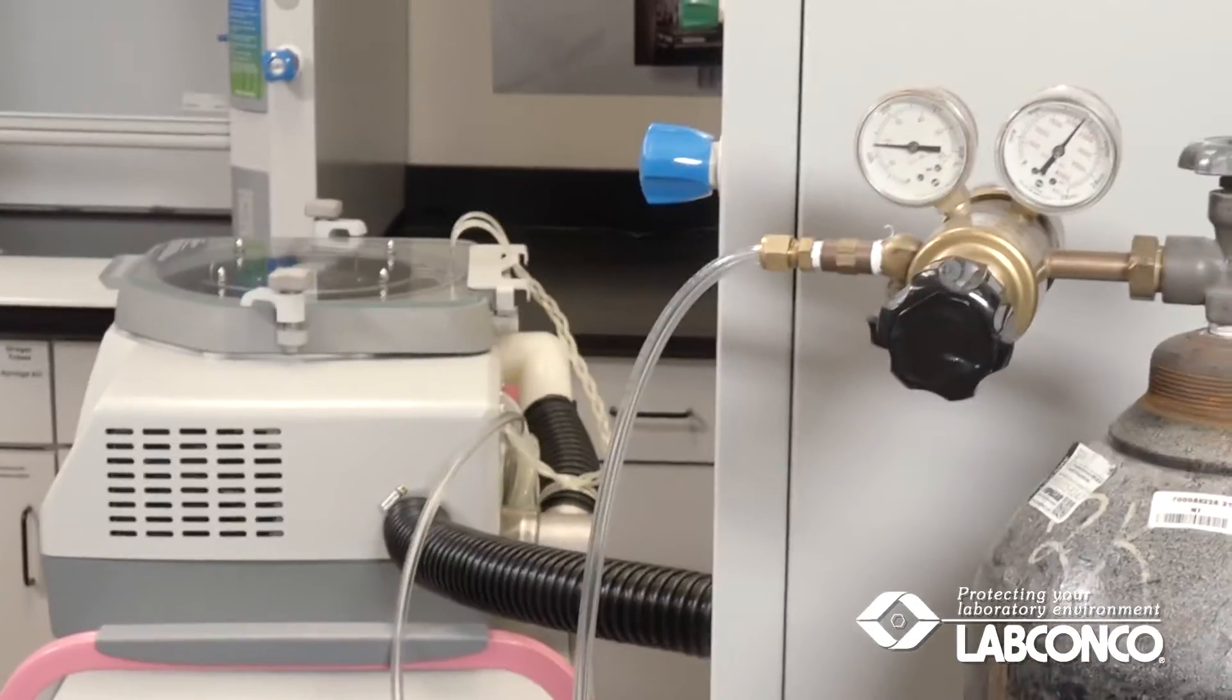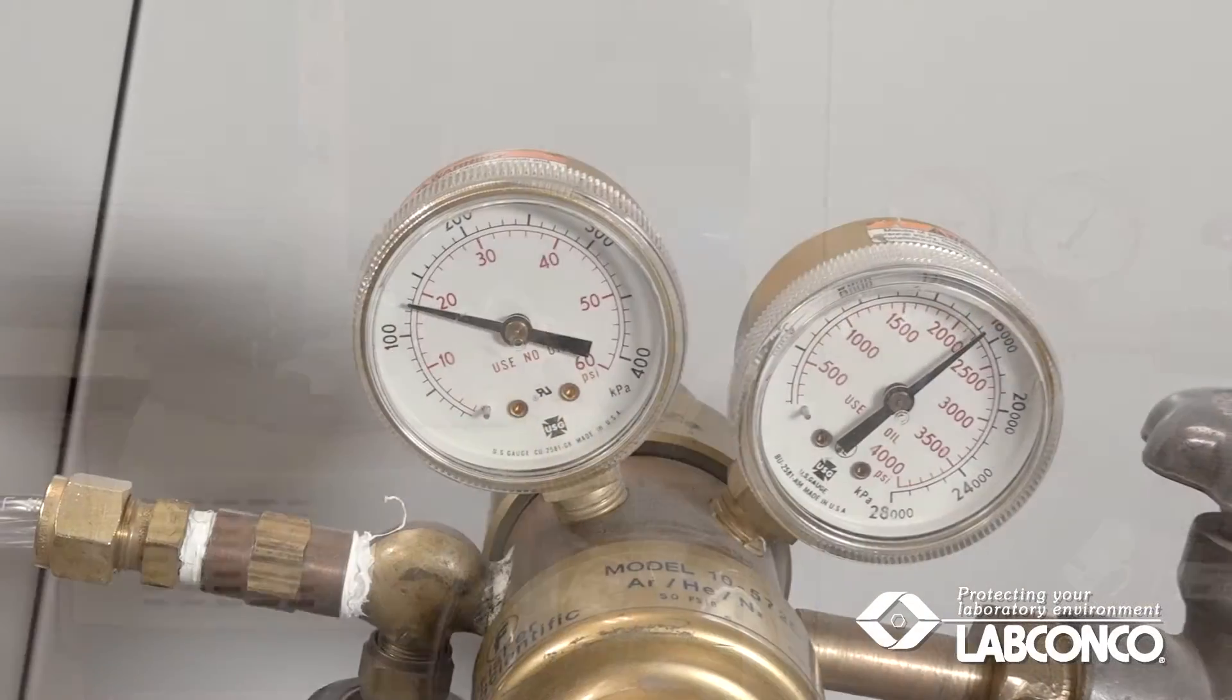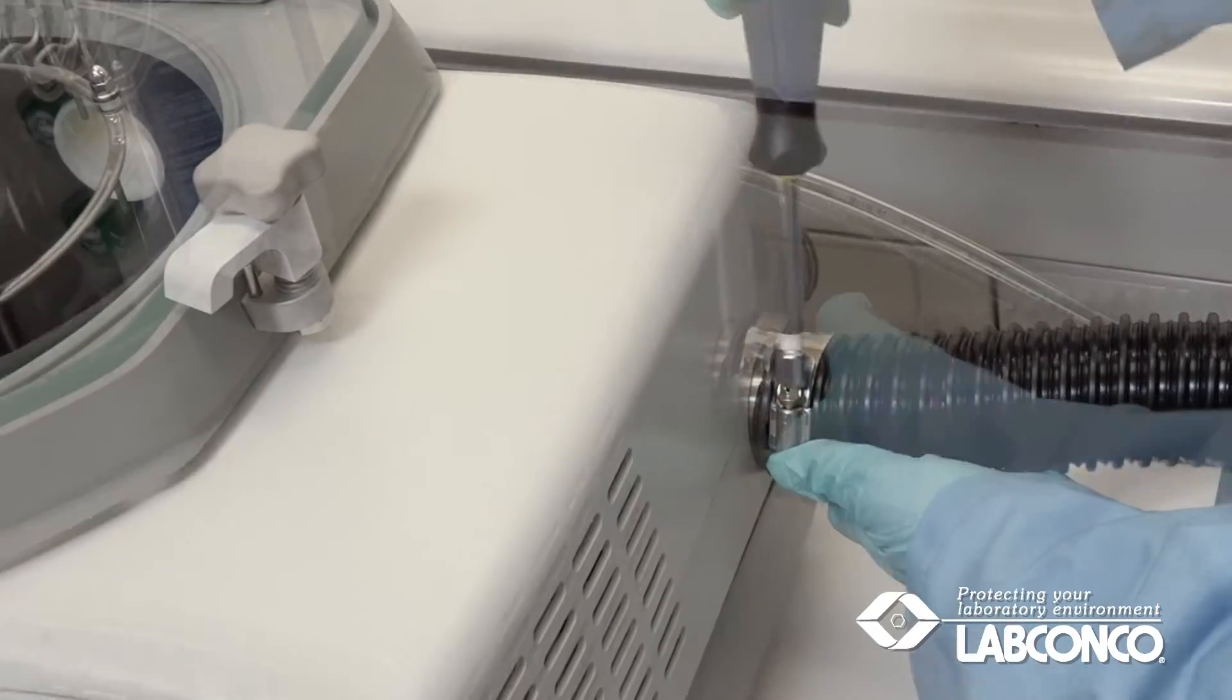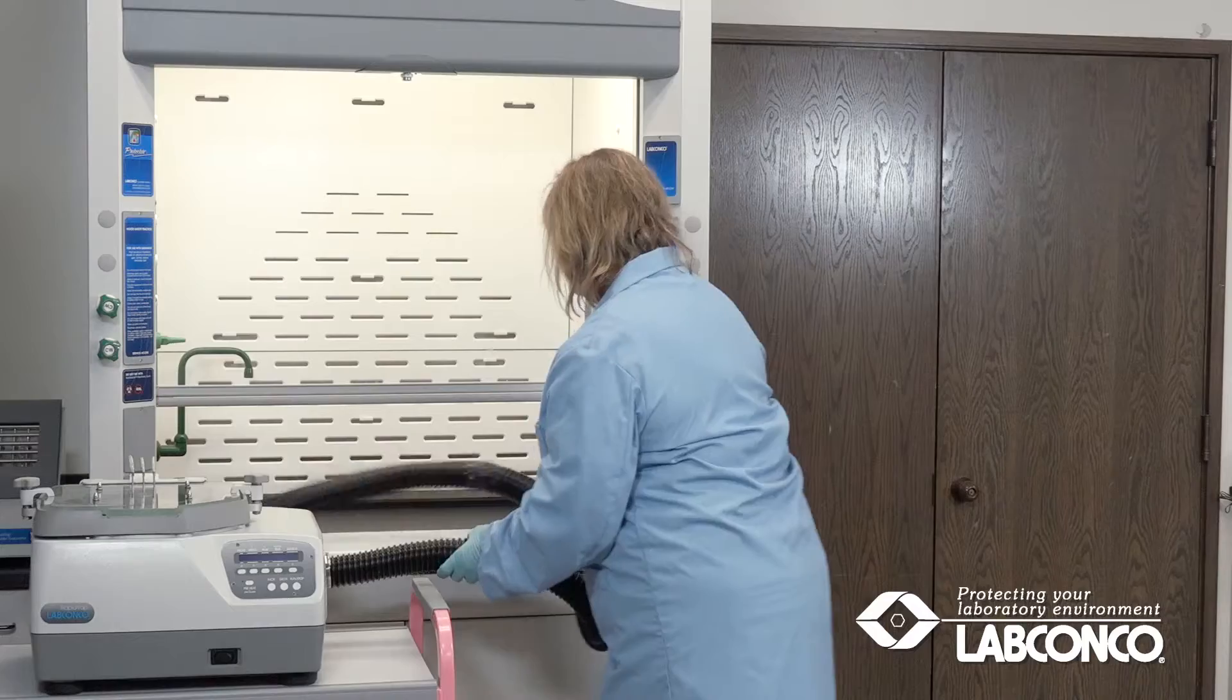The nitrogen pressure must never exceed 20 psi, so a regulator is required on the nitrogen source. Attach the supplied exhaust hose and vent into a fume hood or other ventilation device.